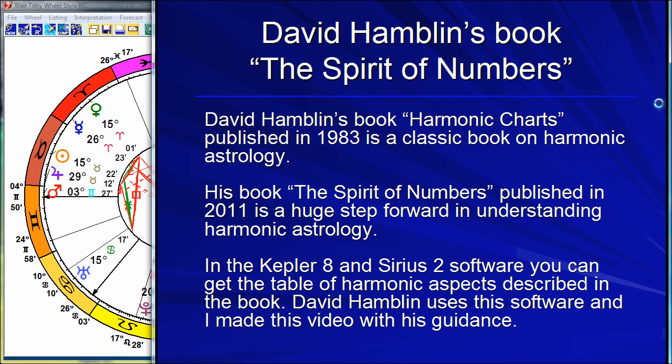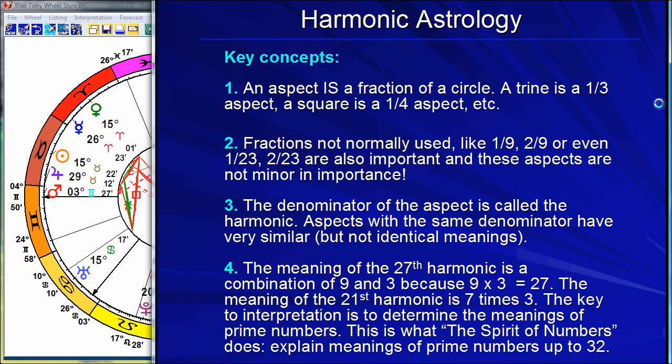I'll tell you about the book and how you use this table to get insight into people's charts. We're going to look at the chart of a famous person, the politician Tony Blair, former Prime Minister of England, to demonstrate the ideas. But first, to make sure we're all on the same page, let me just review a few basic concepts about harmonic astrology.